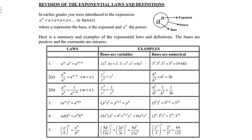Another example of Law 4: 3 times 6 is 18 and 3 times 8 is 24, giving 3 to the power 18 times 3 to the power 24. Law number 5: a divided by b to the power m — again like Law 4, we distribute the m to both a and b.